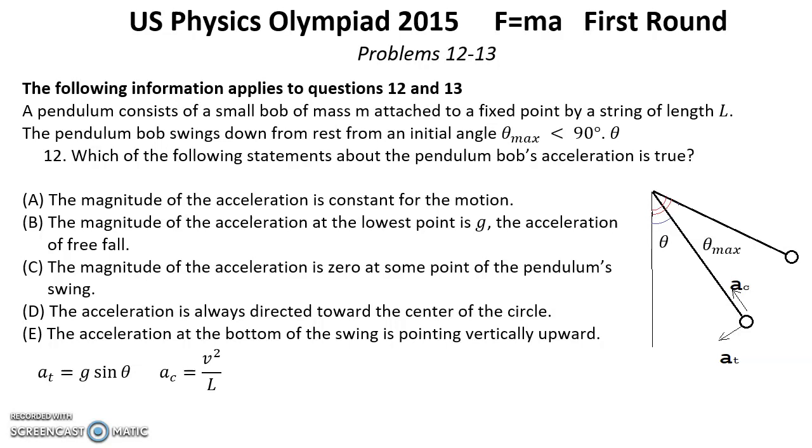V squared we can find from energy conservation. So that's the expression for v squared. When we put v squared in this formula for centripetal acceleration, we can get a result for centripetal acceleration.